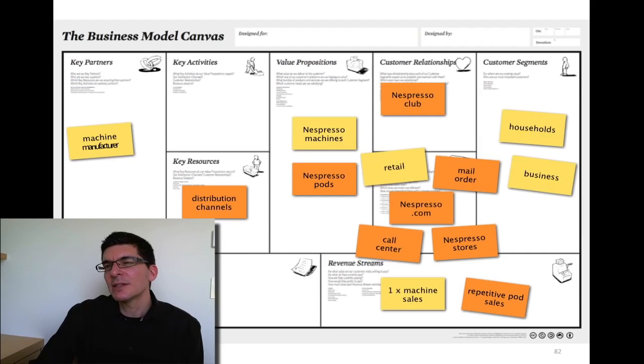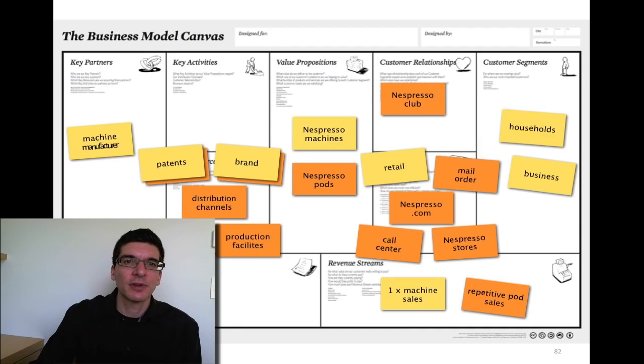So let's look at the left hand side of the canvas. What do they really need to make this happen? Let's look at the key resources. What do you think are the key resources that Nespresso needs to make their business model reality? A couple of things. One of the most important parts are the patents. They have to protect their system. So nobody else could make pods that would fit in that machine. And they defended that for a very long time.